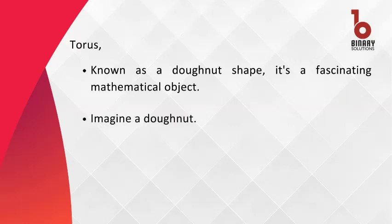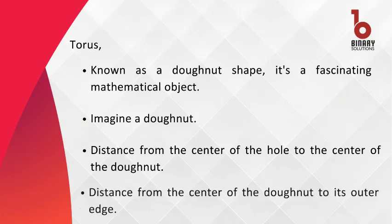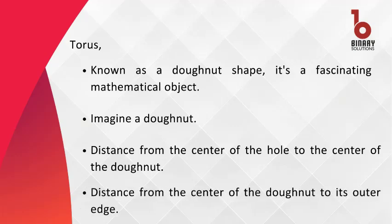Picture a donut. The distance from the center of the hole to the center of the donut is called the inner radius. The distance from the center of the donut to its outer edge is the outer radius.